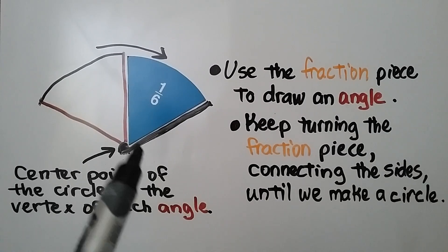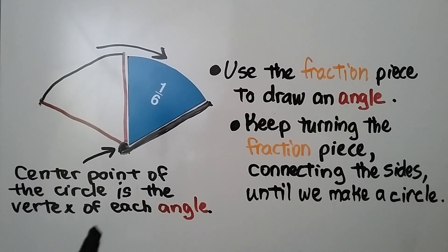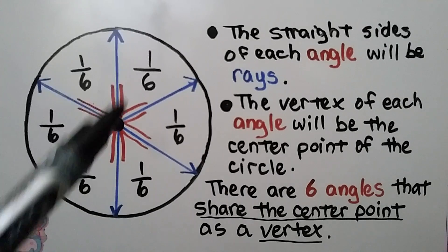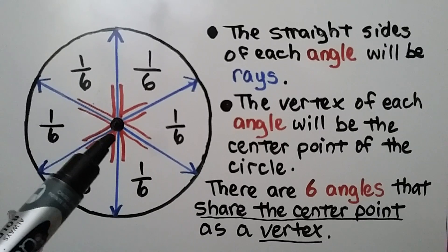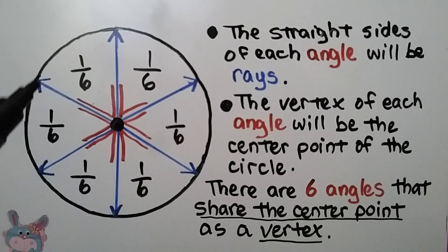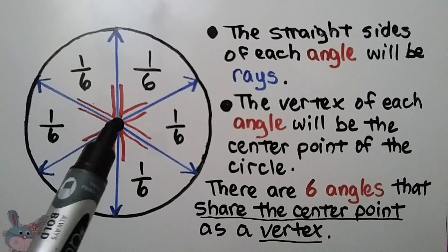We draw a line along the side of it, and we can connect the top. The center point of the circle is the vertex of each angle. The straight sides of each angle will be rays. A ray starts at an endpoint and goes outward, and it has an arrowhead at the end showing it goes on forever. The vertex of each angle will be the center point of the circle.